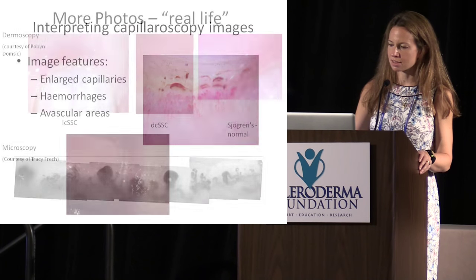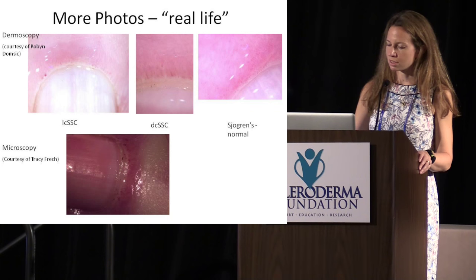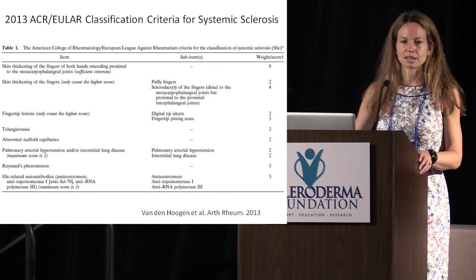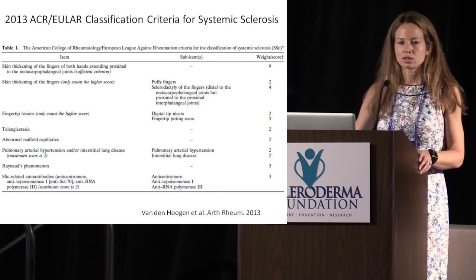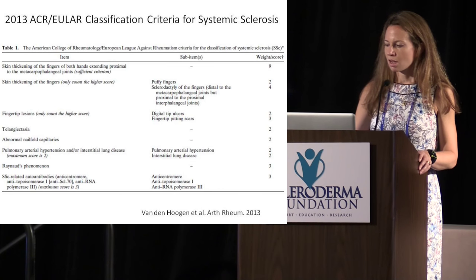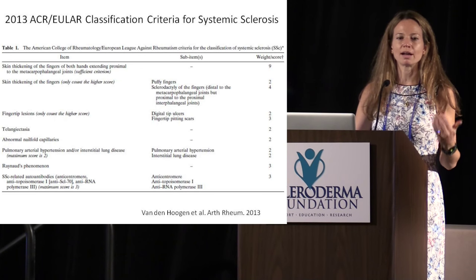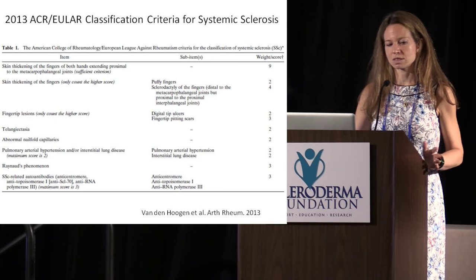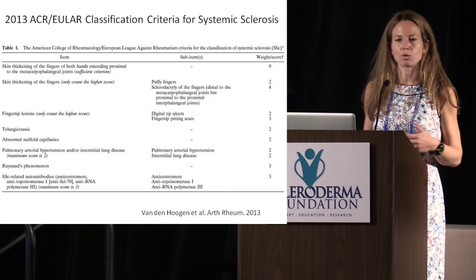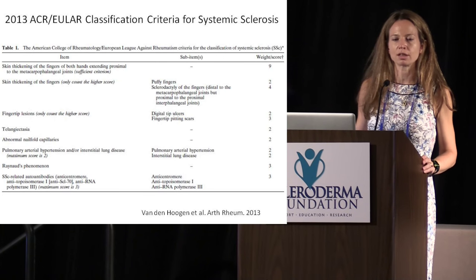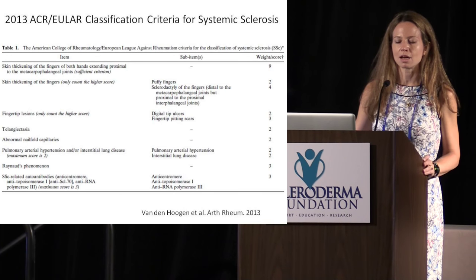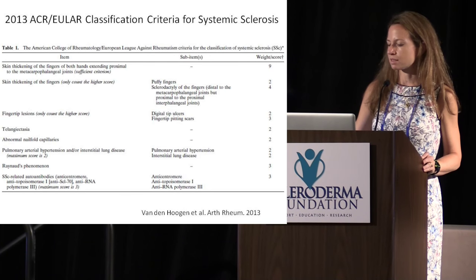Here are some more pictures of that, taken by some of my colleagues using these different techniques. Just with that — without any testing, just a careful physical exam and listening to this patient's complaints — this rheumatologist would be able to tell that patient at that moment that she has scleroderma. I'm sure they would want to do some additional testing and confirmation, but with these kinds of tools it is easier. You are able to make this diagnosis early.